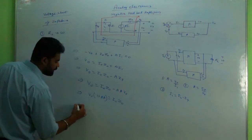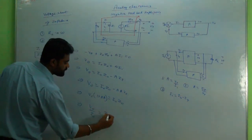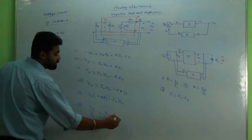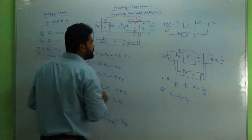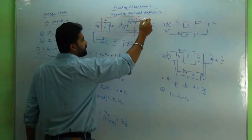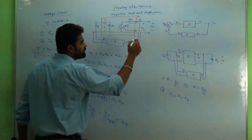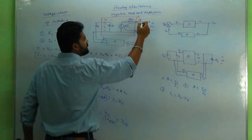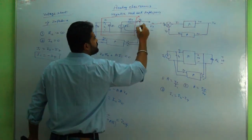Ultimately, V_naught / I_naught = Z_naught / (1 + Aβ), and that is nothing but ZOF. ZOF is the output impedance with feedback. It should be explained from the initial stage: ZOF is defined as the ratio of the voltage available at the output to the current available at the output.